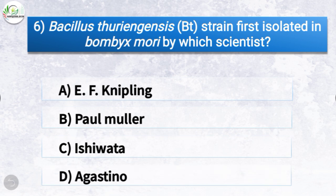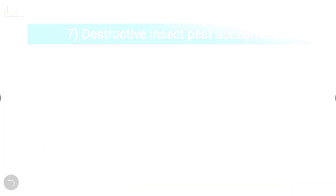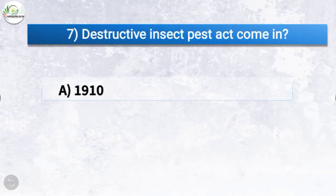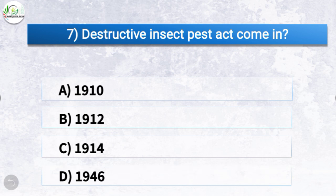Question number six: Bacillus thuringiensis strain was first isolated in Bombyx mori by which scientist? The options are E.F. Knipling, Paul Müller, Ishiwata, or Agostino. The correct answer is option C, Ishiwata. So Bacillus thuringiensis strain was first isolated in Bombyx mori by Ishiwata.